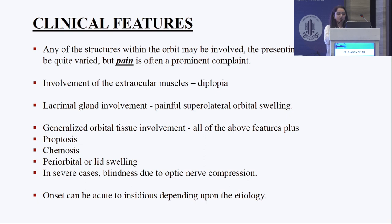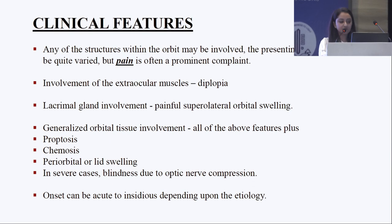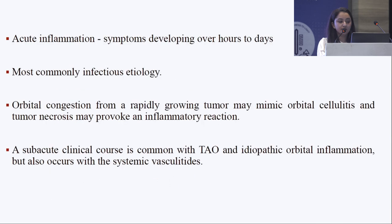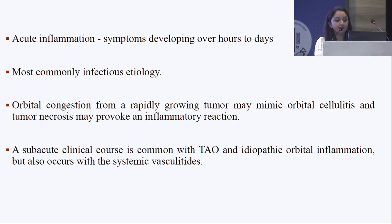Most common clinical features include pain, which is a prominent complaint. Involvement of extraocular muscles can cause diplopia. Lacrimal gland involvement can lead to a painful supralateral orbital swelling. Generalized orbital tissue involvement can lead to proptosis, chemosis, periorbital swelling, and even blindness in severe cases due to optic nerve compression. The onset can be acute, subacute, or insidious. Orbital congestion from a rapidly growing tumor may also mimic orbital cellulitis, and tumor necrosis may provoke an inflammatory reaction.